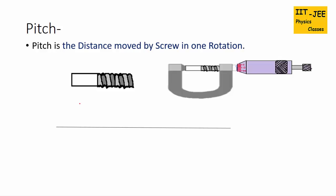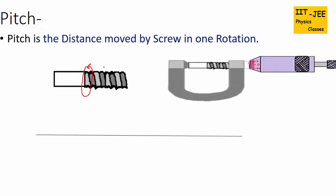Pitch is the distance moved by screw in one rotation. This is the screw of the micrometer screw gauge. When screw does one rotation like this way, one rotation, then the distance traveled by this screw in one rotation is called as pitch. So suppose screw is here and in one rotation it will be here. So distance between this, this distance is called as pitch.